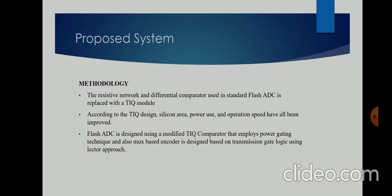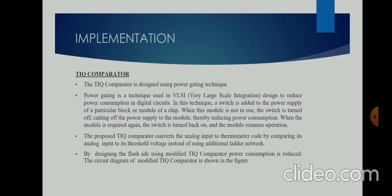We also designed a MUX-based encoder. The MUX used is a 2-to-1 multiplexer, and transmission gate logic using the Lector approach is used in the MUX encoder. In normal Flash ADC there is a resistor ladder network, but here we used a TIQ module, which is the sole purpose of power reduction. When the number of comparators is decreased, the number of transistors used in the project is also decreased, which greatly reduces the area compared to the base paper.